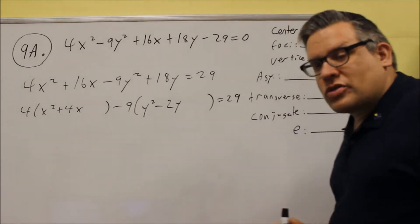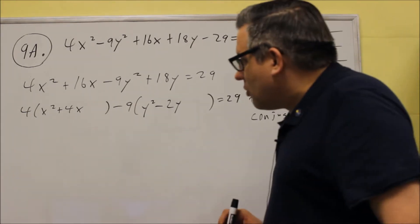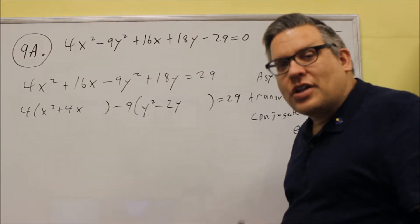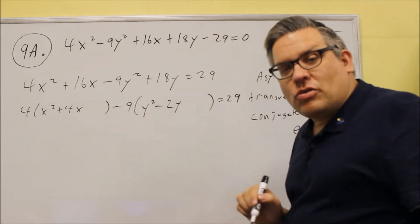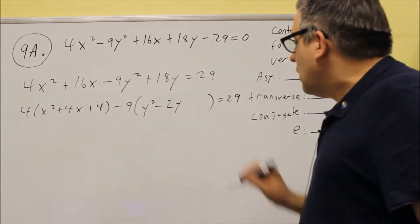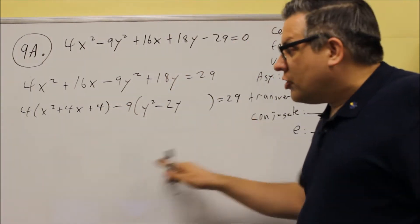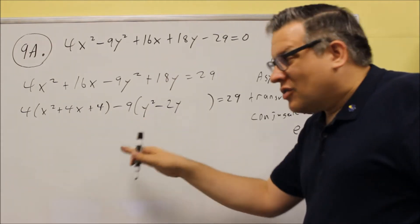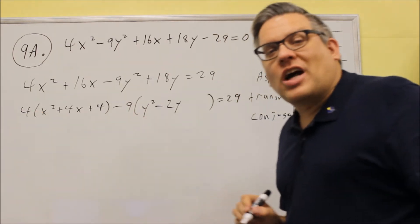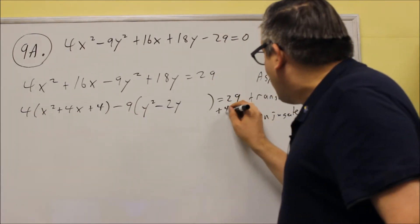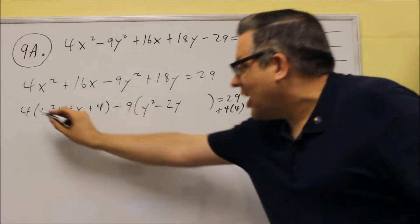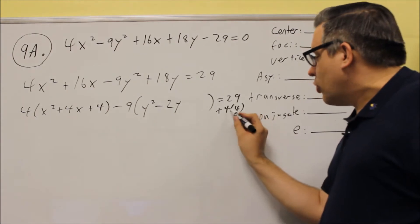We're going to do the complete the square steps for each one. Complete the square step works by, you take this number, divide it by 2, and then square it. If you take 4 divided by 2, that's 2. You square it. That's going to give you a plus 4. On this side, you're going to add the 4, but don't forget to multiply the number you get here by the number on the outside. So we're going to add a 4 times 4 here. You're adding that number inside times whatever you have on the outside.